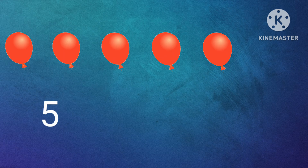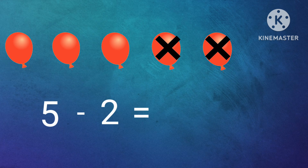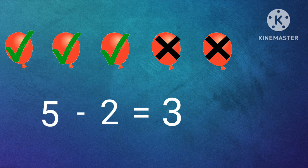In these 5 balloons, we have taken 2 balloons. So how many we have now? Shall we count? 1, 2, 3. 3 balloons. So 5 minus 2 equal to 3.